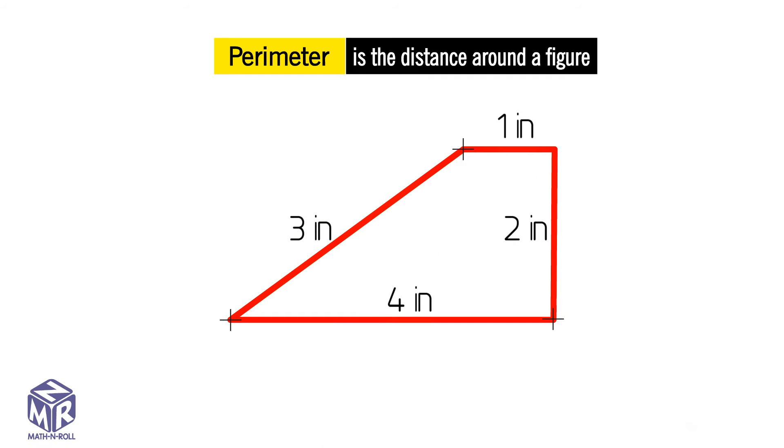Add the length. 4 plus 2 plus 1 plus 3 equals 10. So the perimeter is 10 inches.